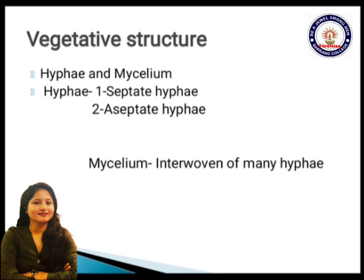Moving on to their vegetative structure, fungi are made up of hyphae and a complex structure named mycelium. Hyphae is a structure which is formed after the germ pore evolves. If a fungal spore germinates, it forms a structure called a germ pore, and if conditions are favorable, this germ pore evolves and forms hyphae. Hyphae are responsible for absorbing nutrients — fungi have an absorptive mode of nutrition. Mycelium is the interwoven mass of many hyphae.